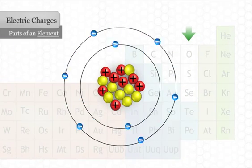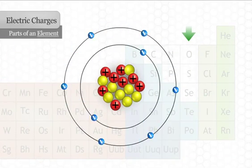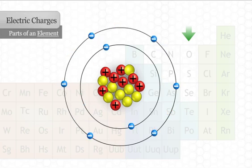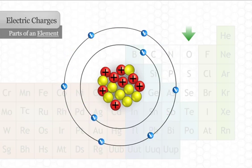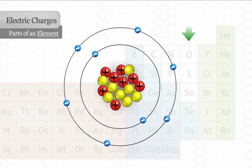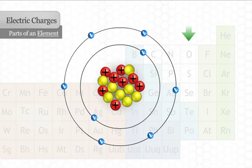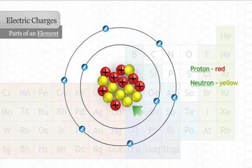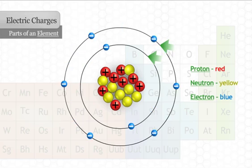The smallest part of an element is the atom. If you looked closely at atoms, you would see that all atoms share something in common with one another. They are all made of the same three basic parts: protons, neutrons, and electrons.